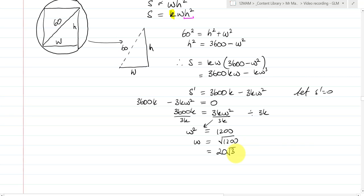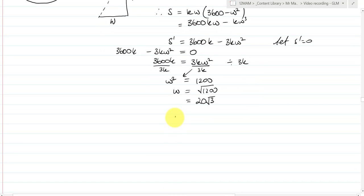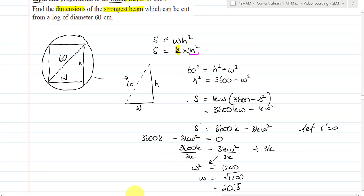So I get an optimal solution, minimum or maximum, when W is equal to 20 root 3. Now, I can determine whether it's a minimum or maximum by looking at S double dash, which in this case is equal to negative 6KW. And at W equals 20 root 3, this is equal to negative 120 root 3 times K, which I don't know whether it's positive or negative, because I don't know if K is positive or negative. That's a little bit of an issue here. But again, go back to the context.